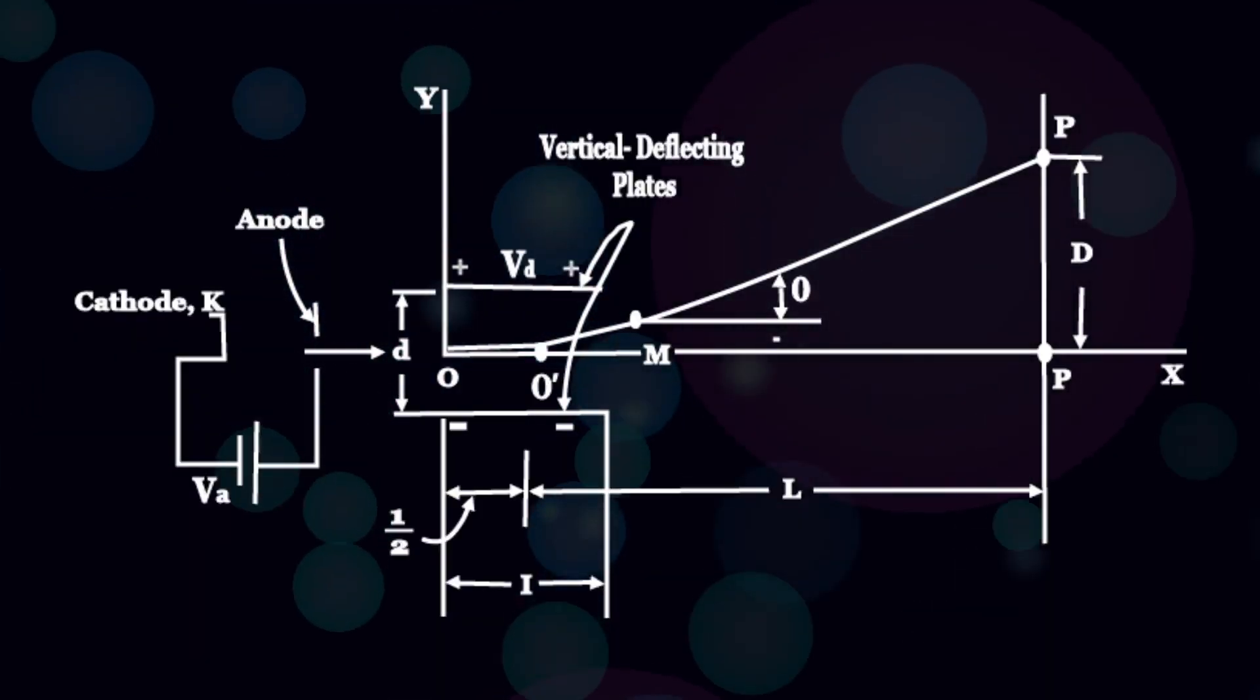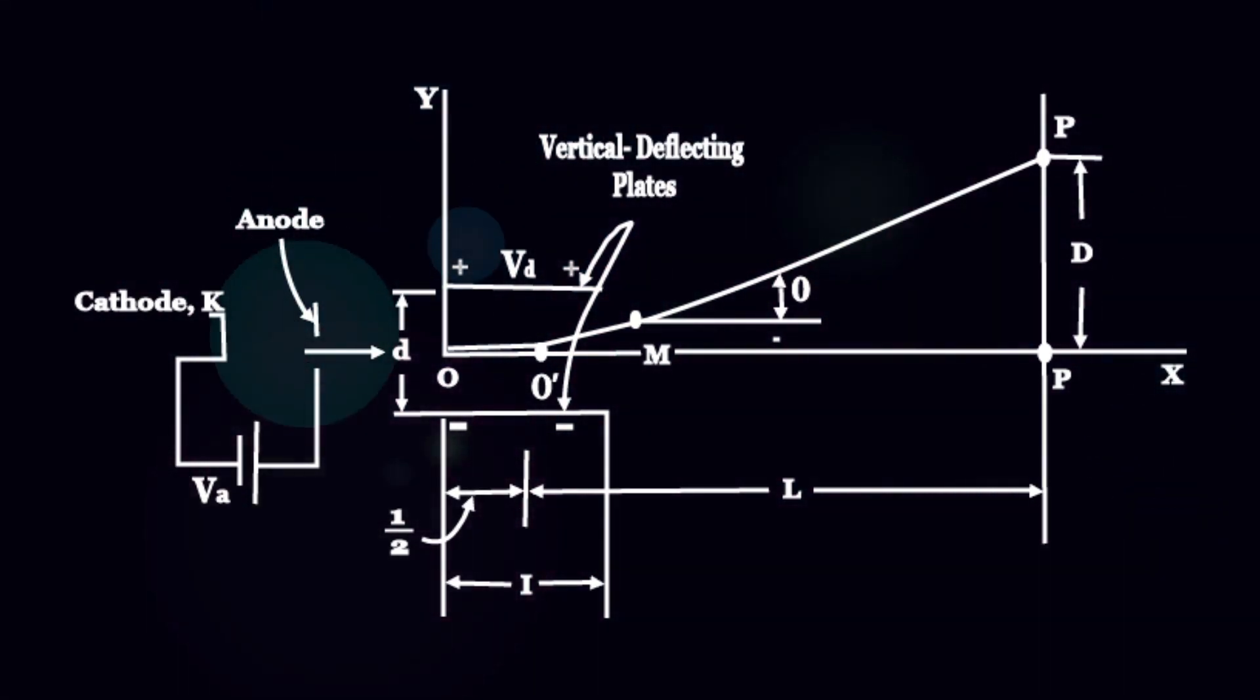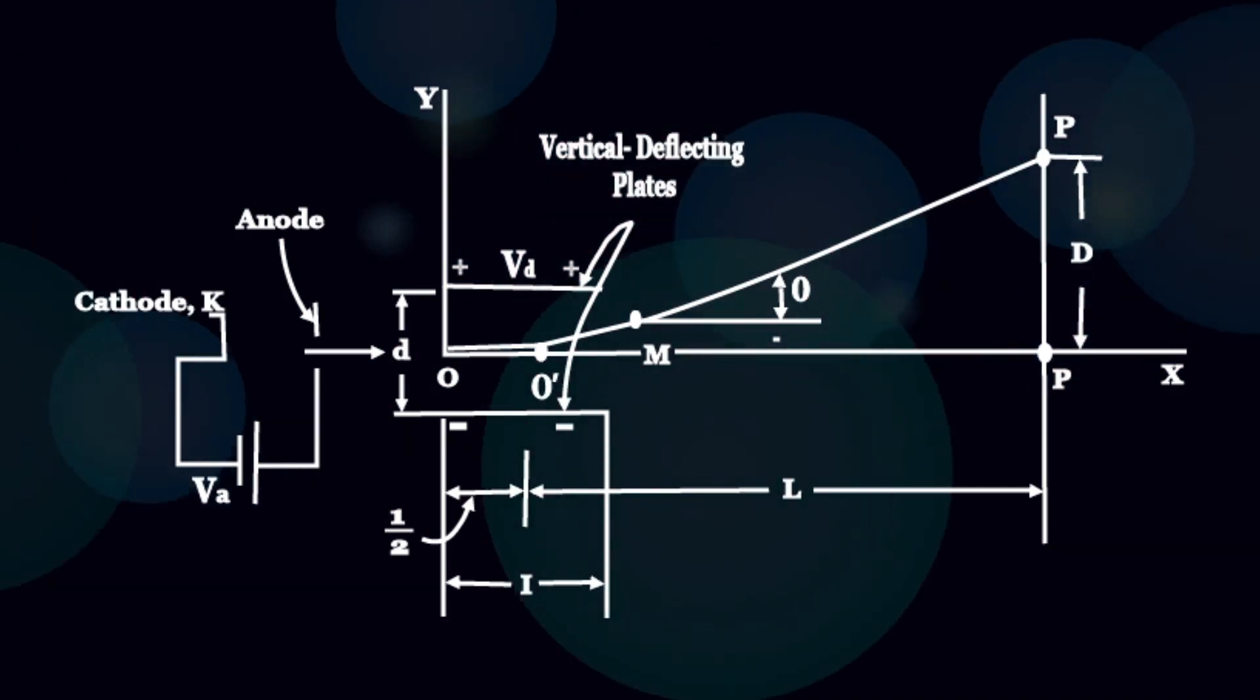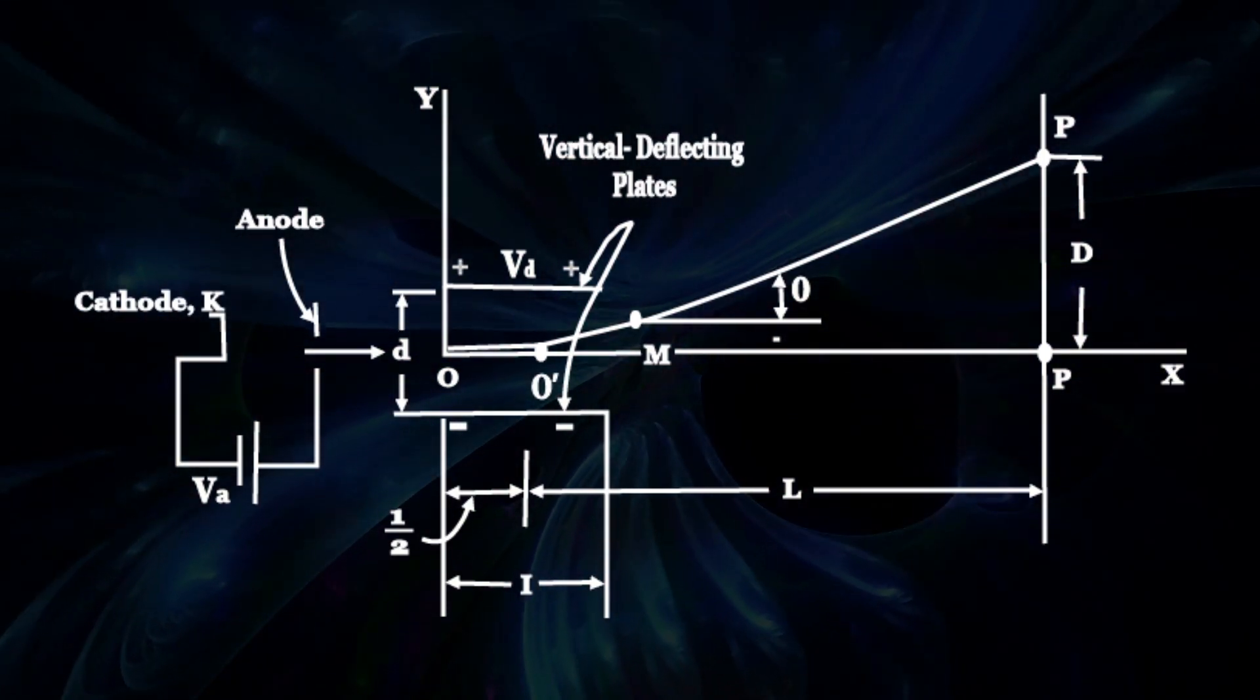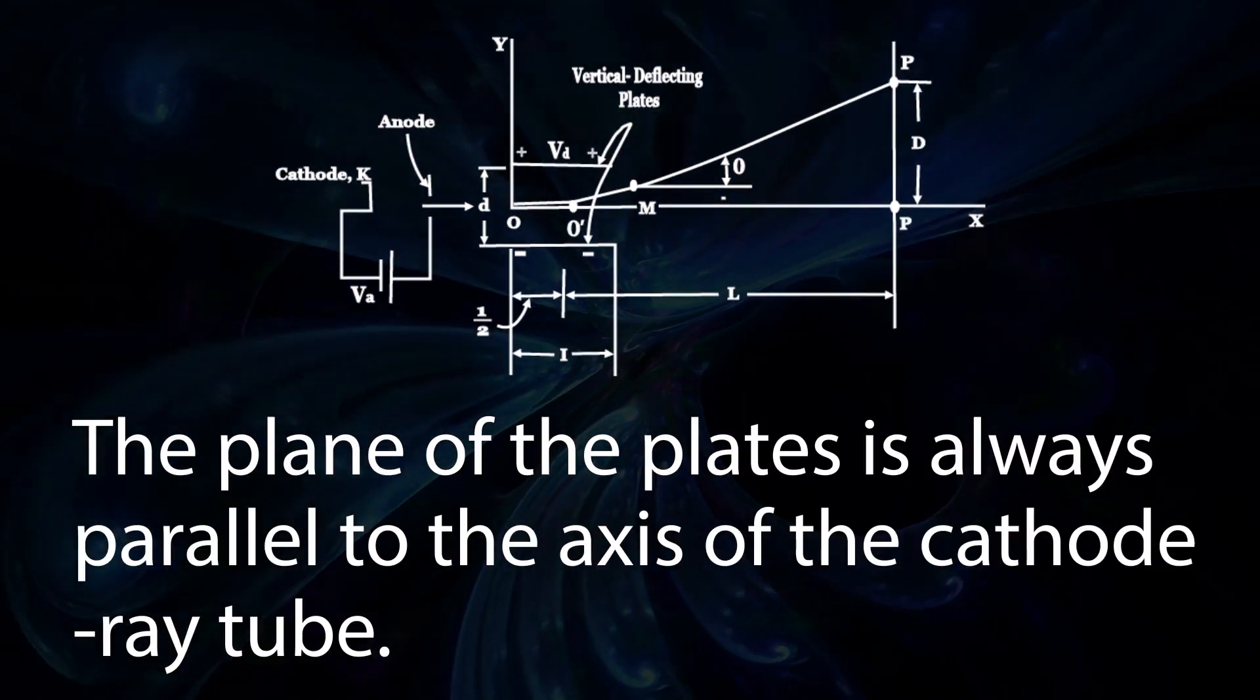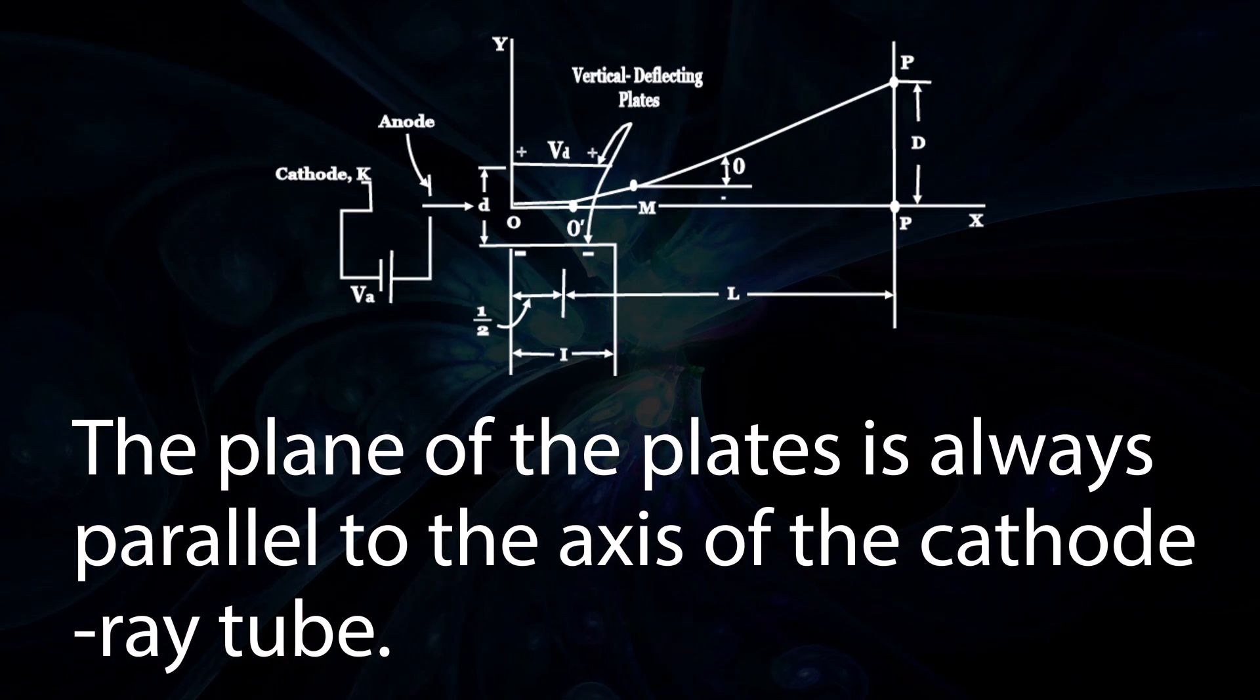For deflecting the beam in the horizontal and vertical directions, two sets of plates are required. The horizontal deflection plates are placed vertically and the vertical deflection plates are placed horizontally. The plane of the plates is always parallel to the axis of the cathode ray tube.